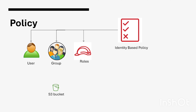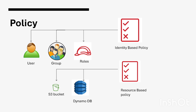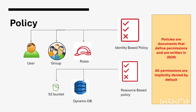Resources such as S3 buckets or DynamoDB can also have policies attached to them, which are known as resource-based policies. Both principles (users, groups, roles) and resources can have policies attached to them. We will study identity-based and resource-based policies separately in a dedicated section. Policies are documents that define permissions and are written in JSON. All permissions are implicitly denied by default — if you create a group, user, or bucket, no permissions are given until policies are assigned.